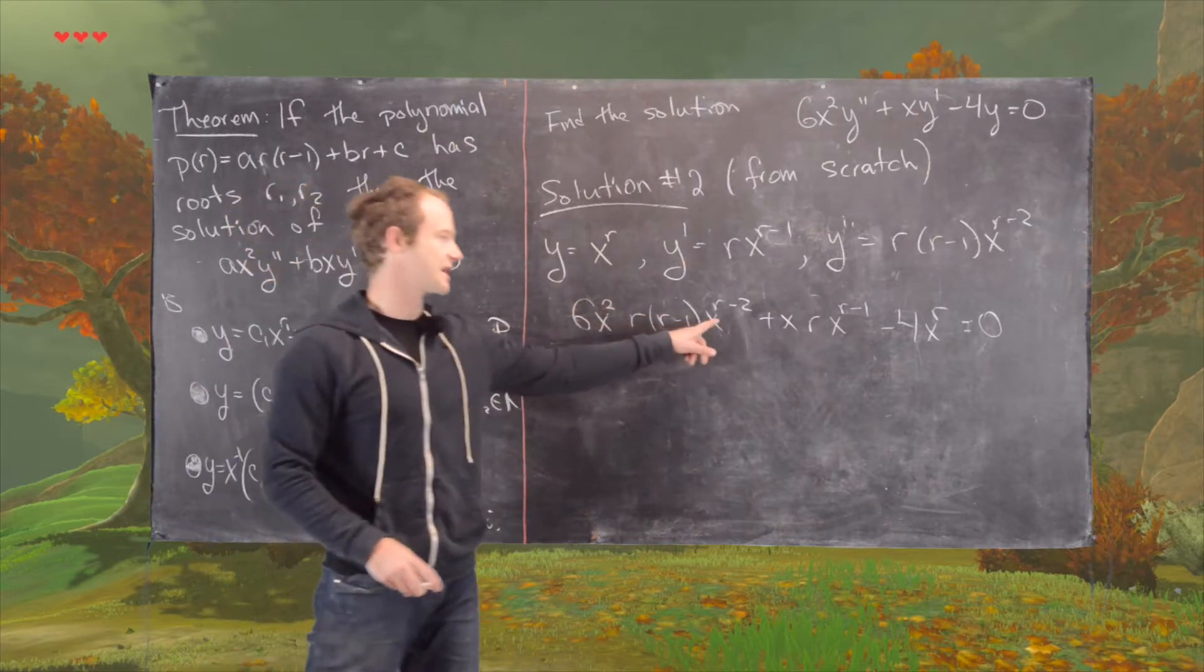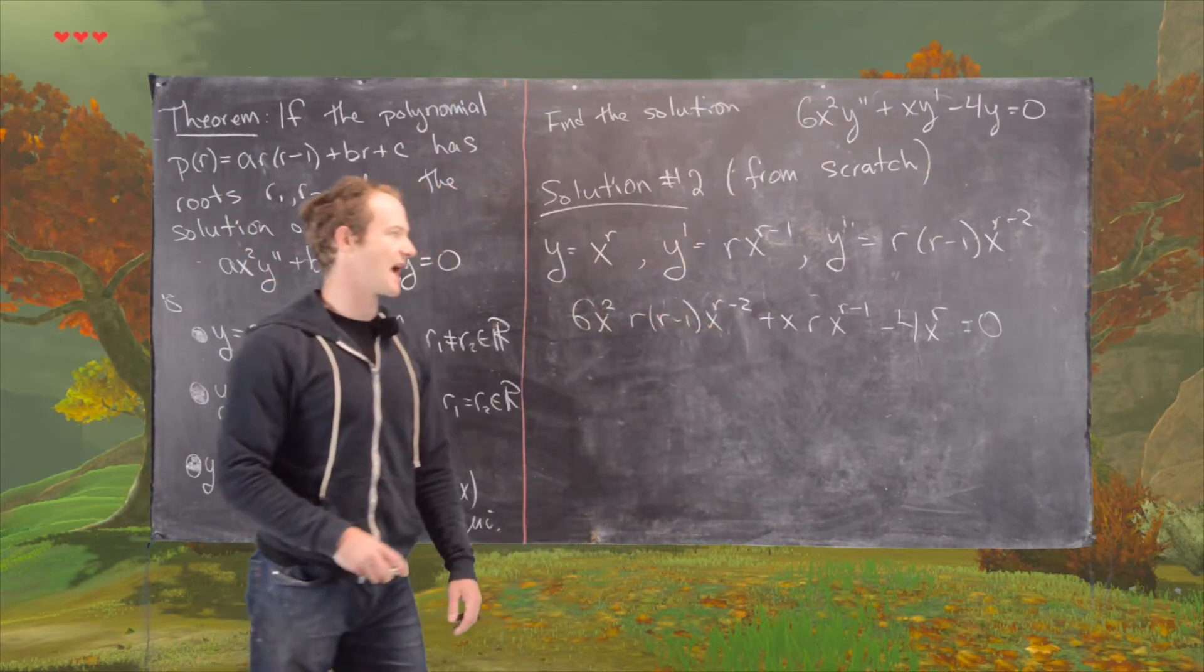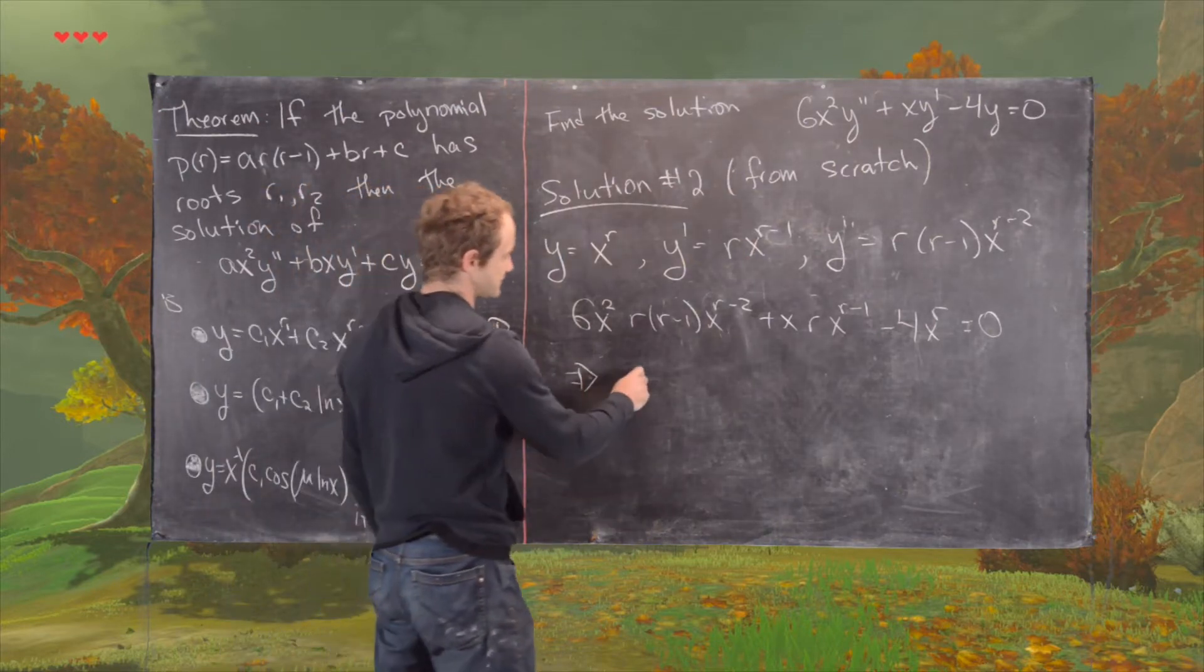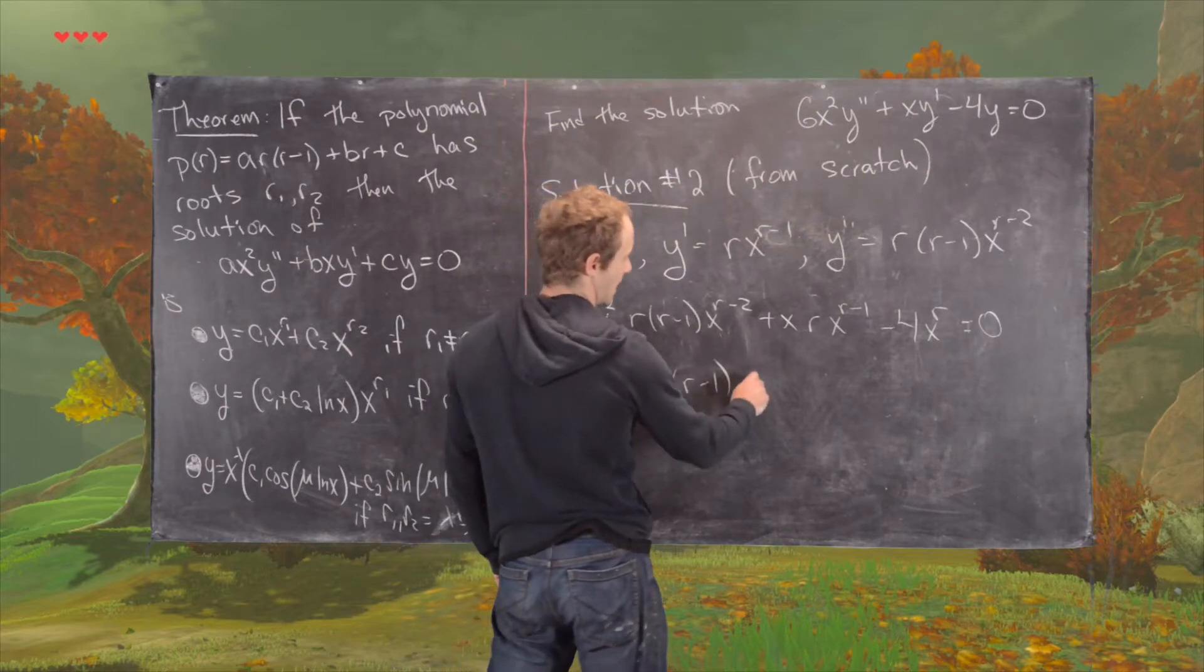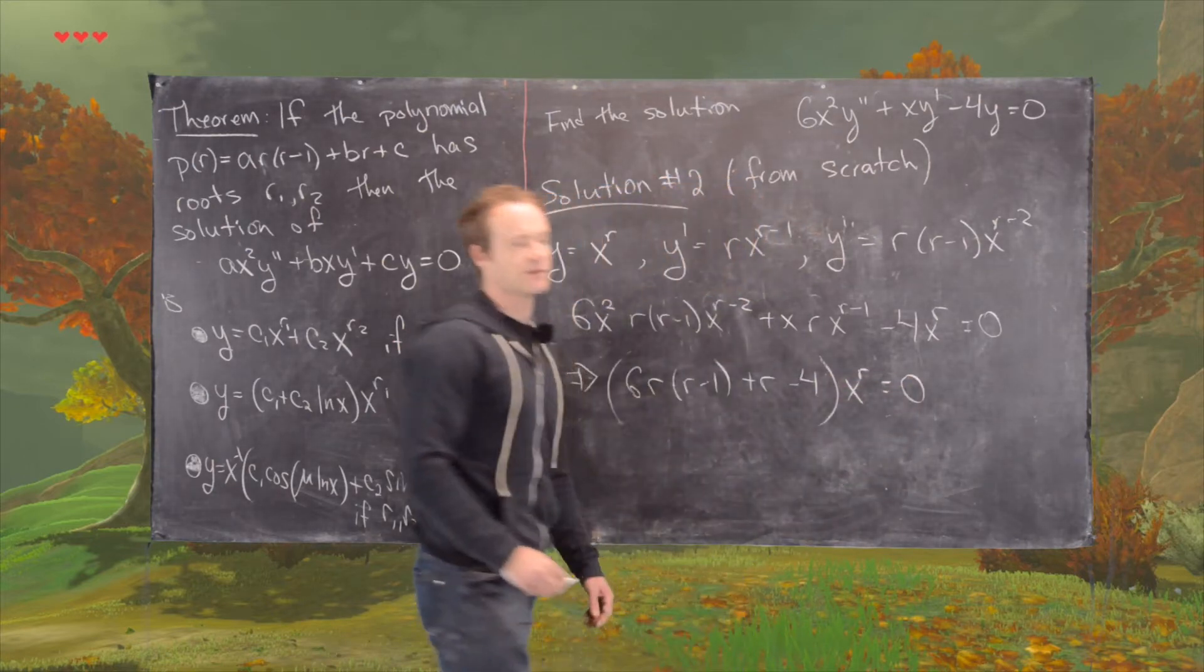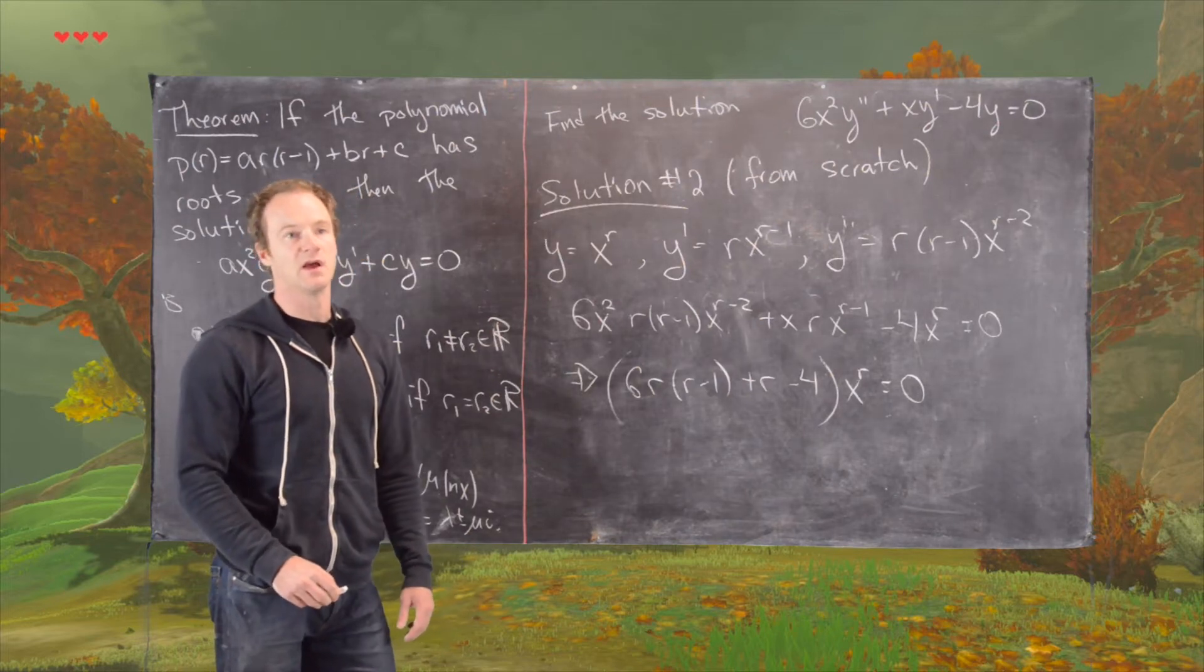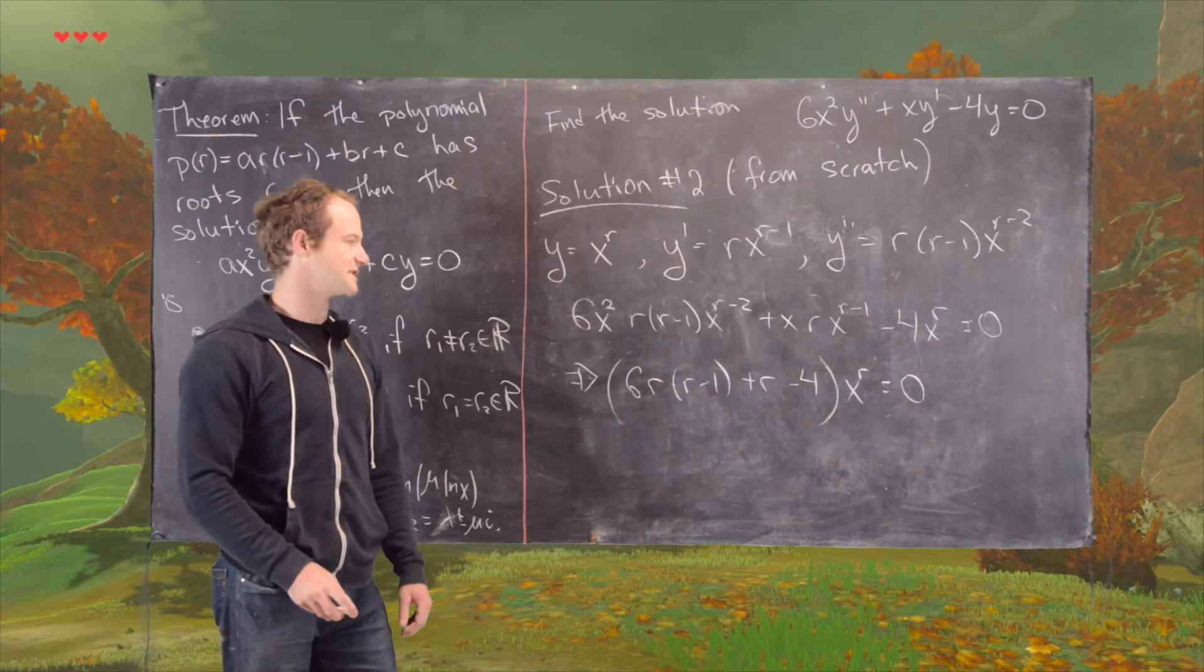So now what we'll notice is this X squared can combine with this X to the R minus 2, and similarly for the X and the X to the R minus 1, and that gives us the following. We have 6R times R minus 1 plus R minus 4, and all of that is being multiplied by X to the R to give us 0. And again, the interval of validity here will be the open interval 0 to infinity, so that X to the R term is never 0.